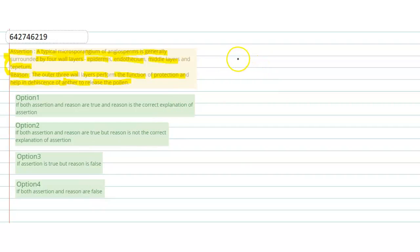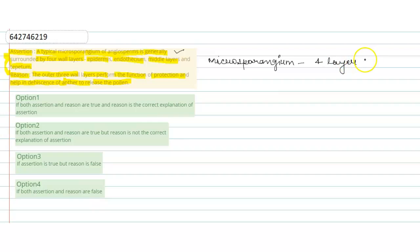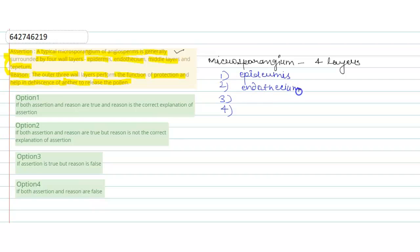First of all, we need to understand that microsporangium, as given in the assertion, has four layers: epidermis, endothecium, middle layer, and the innermost layer is tapetum.